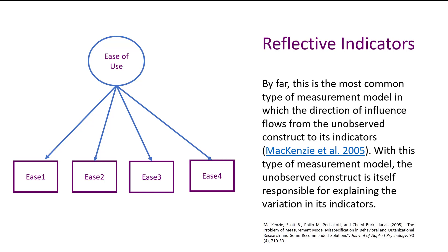Let's say we have a construct called ease of use. We asked customers how easy it was to use a piece of technology. We gave them a survey and asked four questions: Ease 1, Ease 2, Ease 3, Ease 4. This is what we traditionally see in capturing a construct — an unobservable construct where the arrows are reflecting or pointing to these observable indicators. By far, this is the most common type of measurement model.